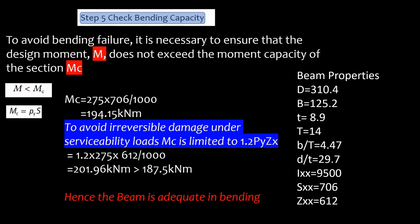So if you do that, 275×706 you get 194,150, so if you divide that by 1000 you get 194.15 kN·m. Remember 275 is already in Newtons per mm². So our bending moment was 187.5, so 194.15 is already greater than 187.5 so the beam is already adequate in bending.